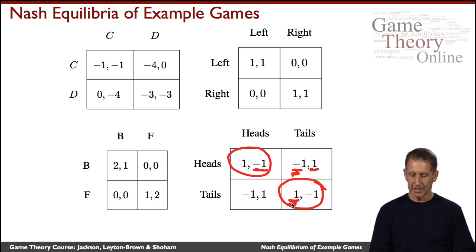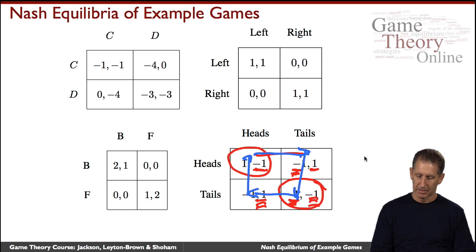But now, if I play tails, you'd rather play heads, because you'd get one rather than the minus one you're getting here. But again, if you're playing heads, I want to play heads too. So we have this cycle where the best responses are leading us in a cycle. And so there is no pure strategy Nash equilibrium in this game of matching pennies.